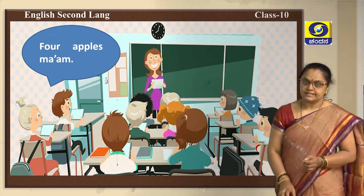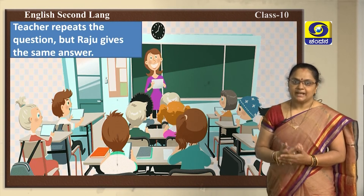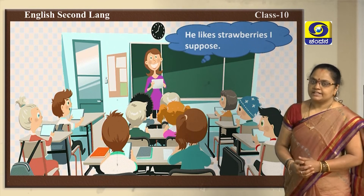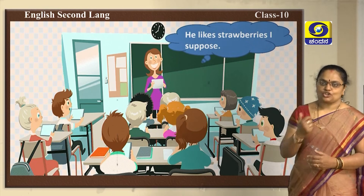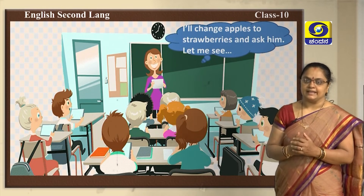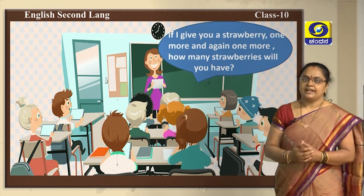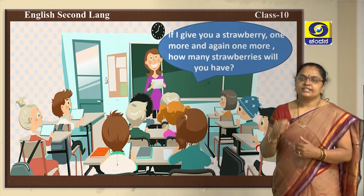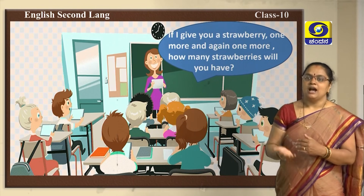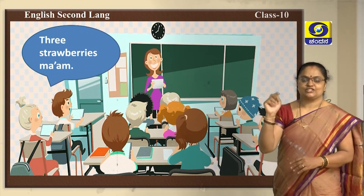Is Raju's answer right? The teacher thinks that Raju might have got confused, so she repeats the question, but Raju gives the same answer. The teacher then thinks that Raju likes strawberries, so if she replaces apple with strawberries and asks him, he may give the correct answer. She changes the question and replaces apple with strawberries: if I give you a strawberry, one more and again one more, how many strawberries will you have? Raju answered, three strawberries ma'am.